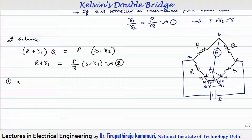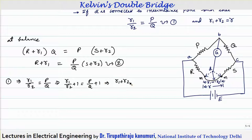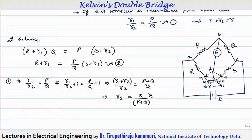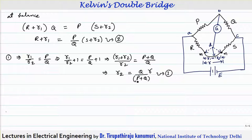From equation 1, r1/r2 = P/Q. Adding 1 to both sides: (r1 + r2)/r2 = (P + Q)/Q. Since r1 + r2 = r, we get r2 = Q·r/(P + Q). This is equation number 3, giving the value of r2 in terms of known parameters.